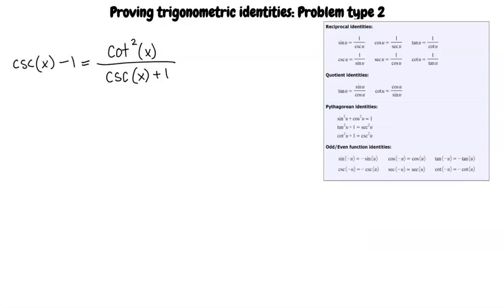Let's begin by looking at this problem. How do we know what to do first? Generally, a good first step is to look at the side of the equation with the most complex expression. In this case, the right side is more complex. We can look at the rules and identities to see what we can substitute into the expression on the right side that will allow us to simplify it.